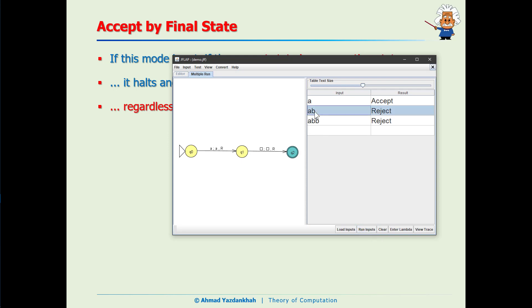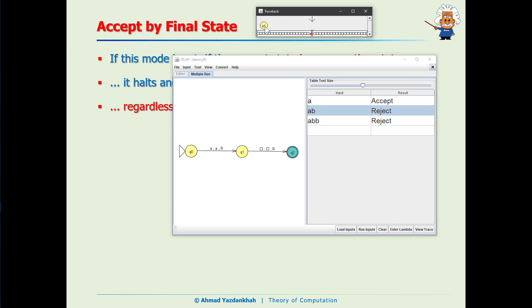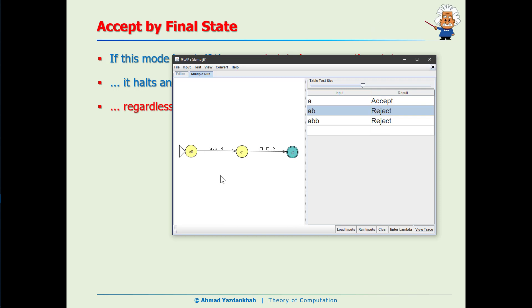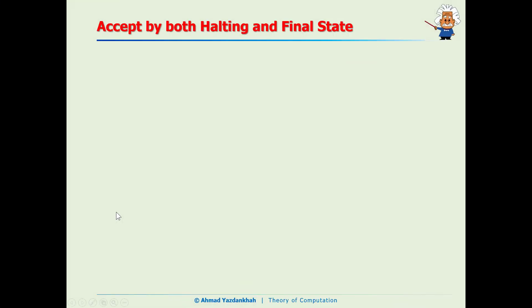Let's see how it works with multiple run — that's exactly what we expected. For example, for input 'ab,' if we trace, we see the machine stops in q1 and 'b' was not consumed. With this technique we can make accept by final state consistent with whatever we set and with what we really expect. This is the mode we like.